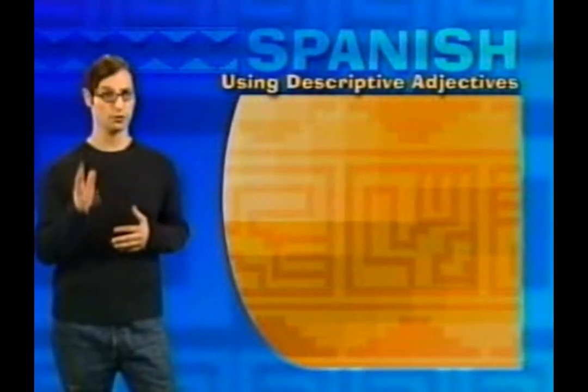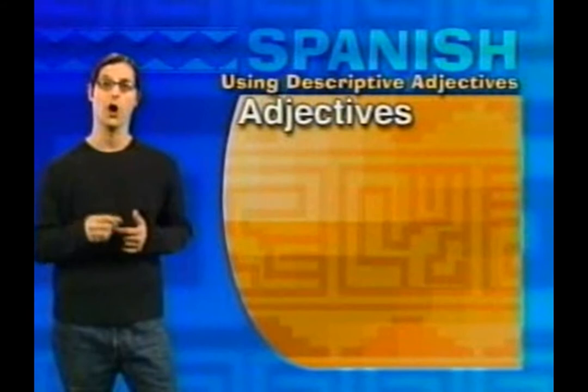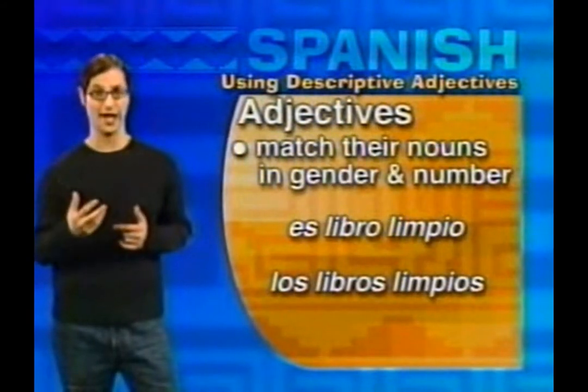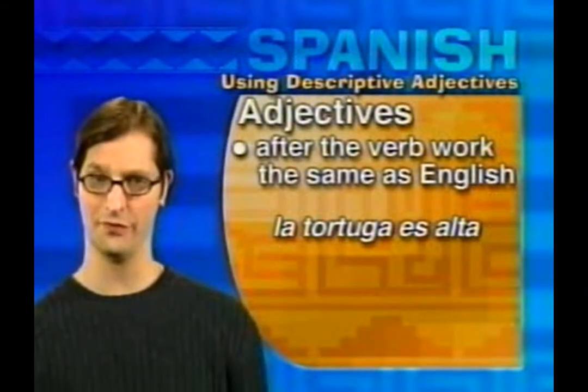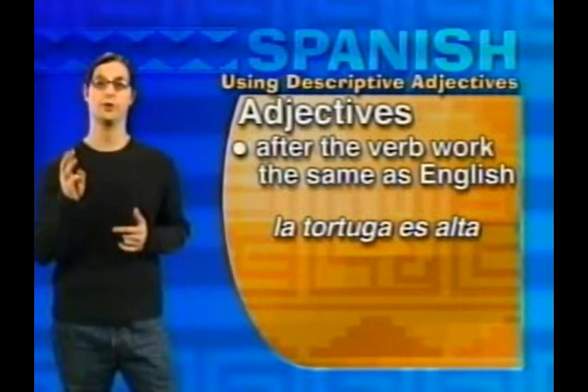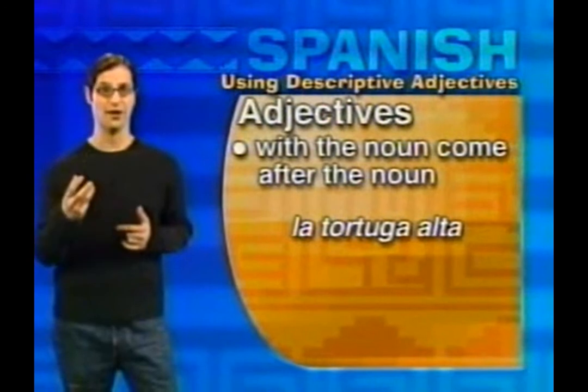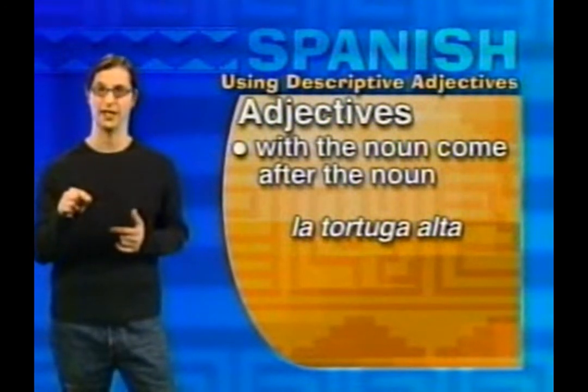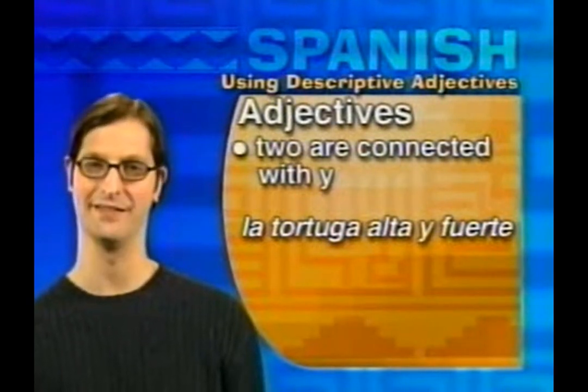Review time! Here are the rules for adjectives. One: all adjectives must match their noun in both gender and number. Two: if the adjective is after the verb, it follows the same rules as English. Three: if the adjective is with the noun, it comes after the noun, not before it like in English. Four: two adjectives are connected with y. That does it for our look at using descriptive adjectives. We hope you learned a lot and enjoyed yourself — it was great, it was fantastic, it was just indescribable. I'm Tessa Monroe, thanks for watching Standard Deviant School, and I'm Kenyatta Rogers — take care!